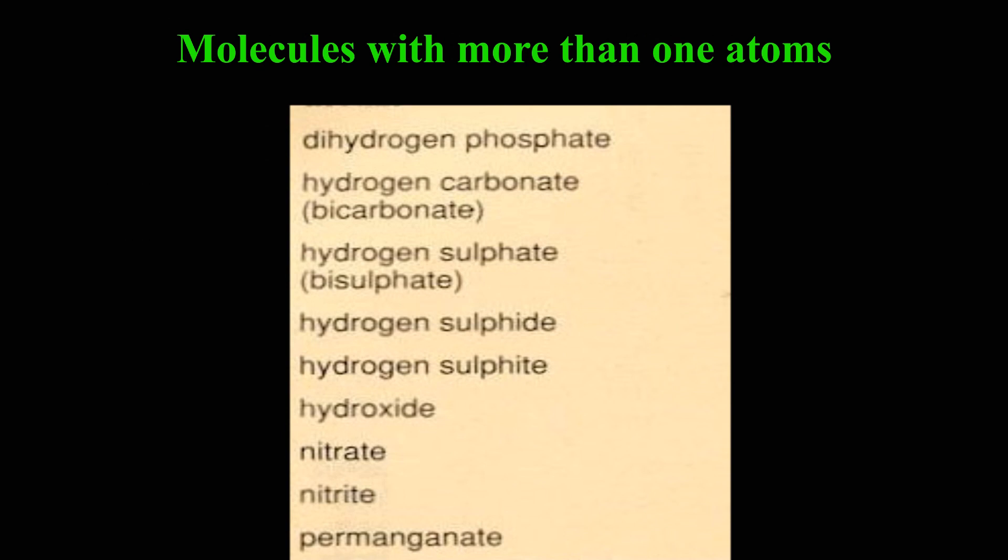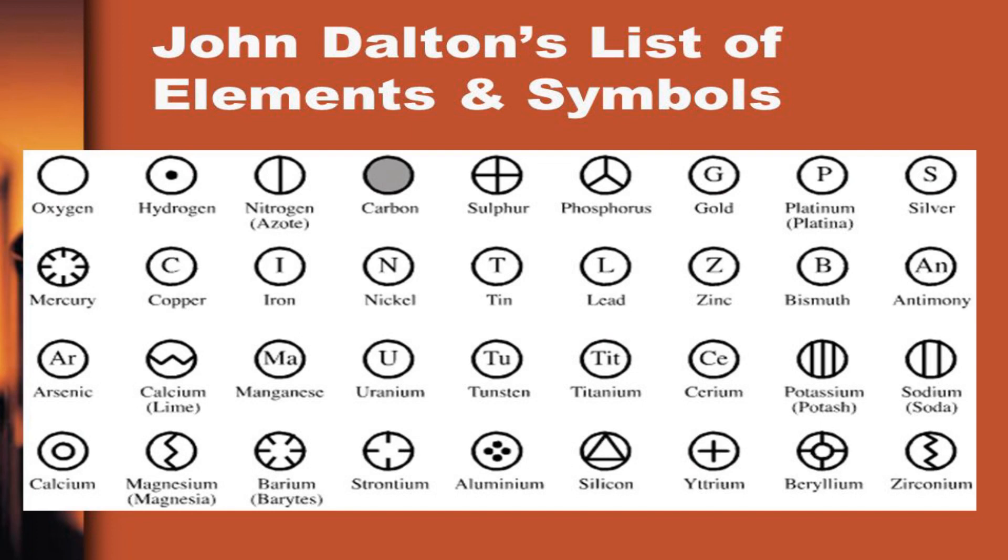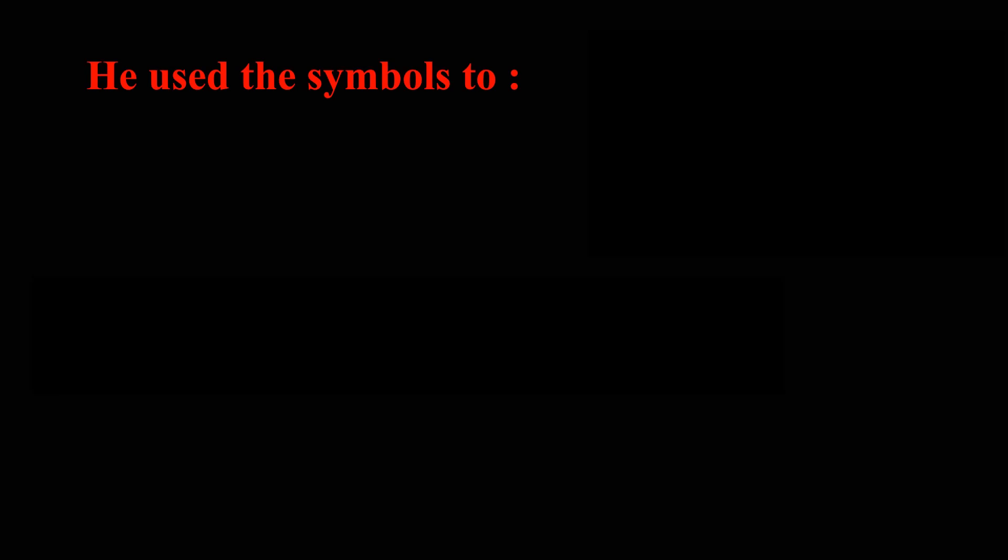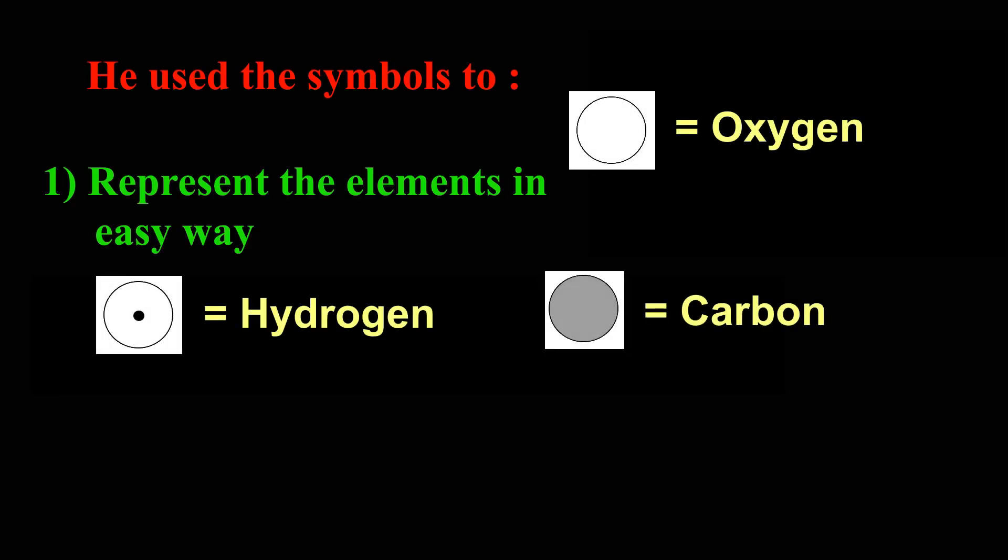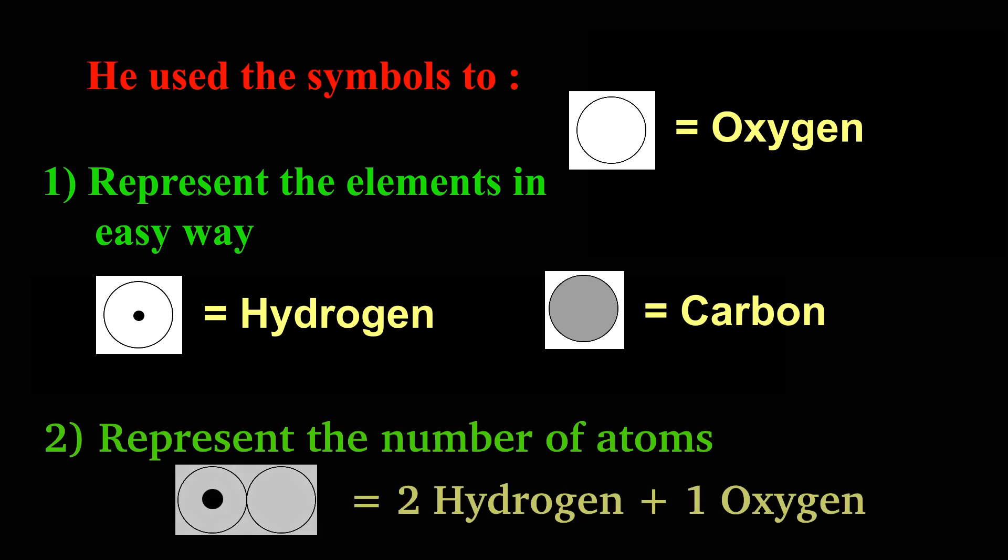To make it easy to write, Dalton was the first scientist to come up with the idea of symbols. He used the symbols to: 1. Represent the elements in easy way, and 2. To represent the number of atoms of that element.